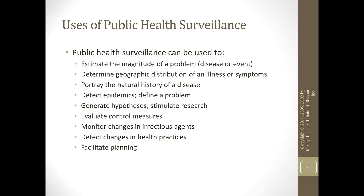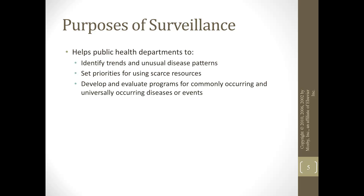Surveillance can detect changes in health practices — for example, obesity is becoming a big issue in the United States, and surveillance helps identify why and what we can do. This facilitates planning and identifying trends and unusual disease patterns. It also helps decide priorities for scarce resources. If a disease has low incidence, it won't be a priority unless it's really contagious and really deadly — surveillance provides that information.